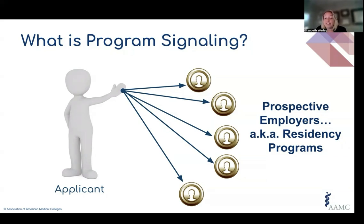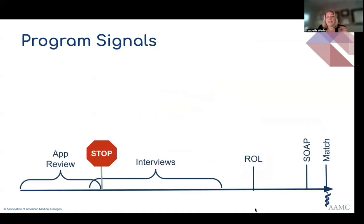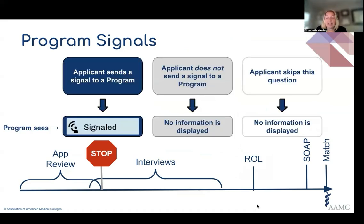With the addition of program signaling, this communication is actually built into the signal itself, giving programs the ability to focus on applicants that are highly interested in their programs at the time of application — potentially high yield applicants that may generate slightly more intense review of their applications. Signals are only intended to be used by programs during the application review phase. Programs will only know if their own program is signaled. If an applicant does not send a signal or chooses not to participate, the program will see a blank space.